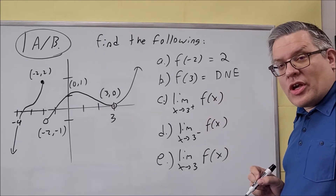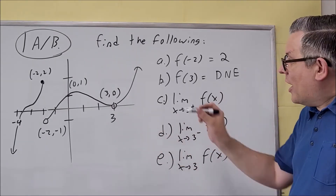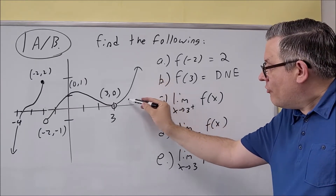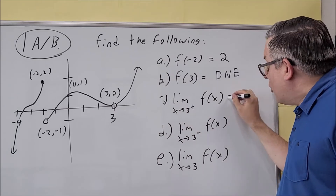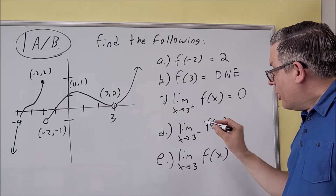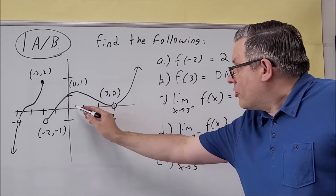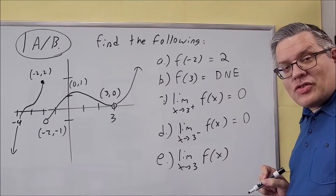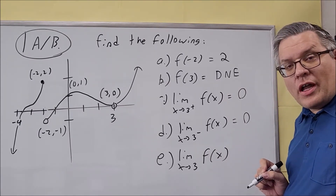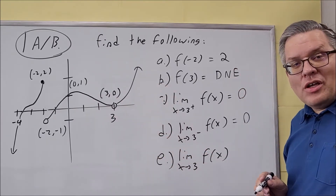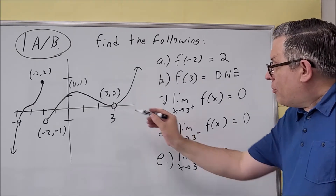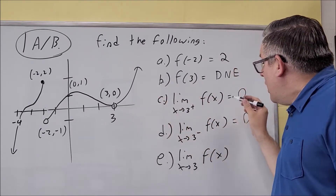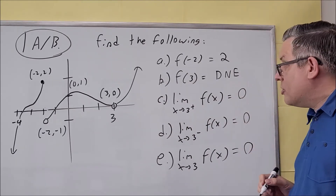Now let's do the limit questions. For the limit as x approaches three from the positive side, you're coming in from the right, getting very close to three, and looking at what y-value you're approaching — that's zero. From the negative side, approaching from the left, it's also approaching zero. For part e, the two-sided limit as x approaches three: since the left and right limits both approach the same value, the answer is also zero.